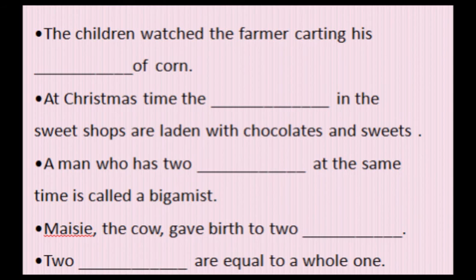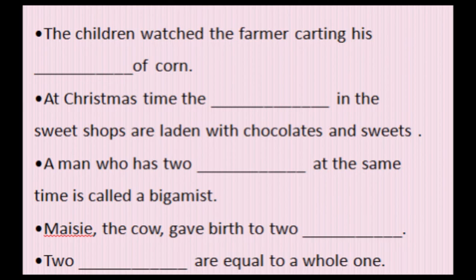Eighth sentence: 'A man who has two dash at the same time is called a bigamist.' Bigamist means a person who has two wives at the same time. Answer: wives. Ninth sentence: 'The cow gave two births' — a cow gives birth to calves, C-A-L-V-E-S. Tenth sentence: 'Two dash are equal to a whole one.' Answer: halves — H-A-L-V-E-S. Two halves are equal to a whole one.